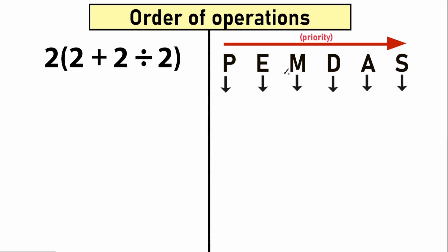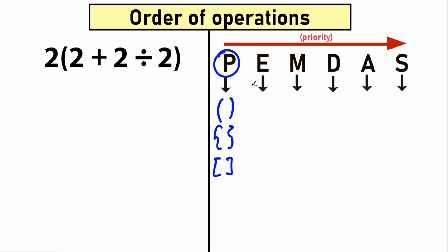PEMDAS is not an English word — we're talking about a quick checklist where each letter stands for something. The letter P stands for parentheses. We're talking about this type of parentheses, this type of brackets, or maybe a fraction bar — it's a grouping symbol. Inside parentheses we group elements and we need to evaluate this expression first. Parentheses has the highest priority. The first step is to evaluate the expression inside parentheses — every time we have a numerical expression we need to scan it for parentheses.